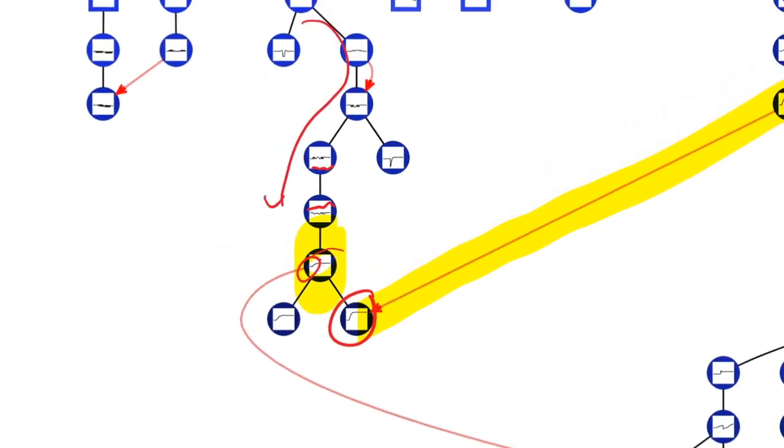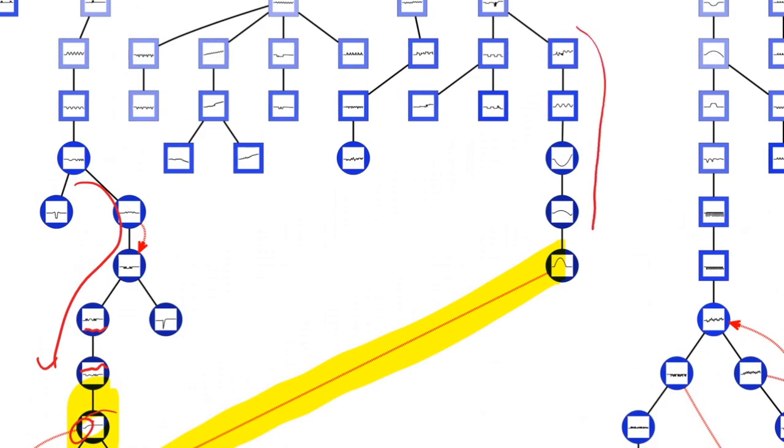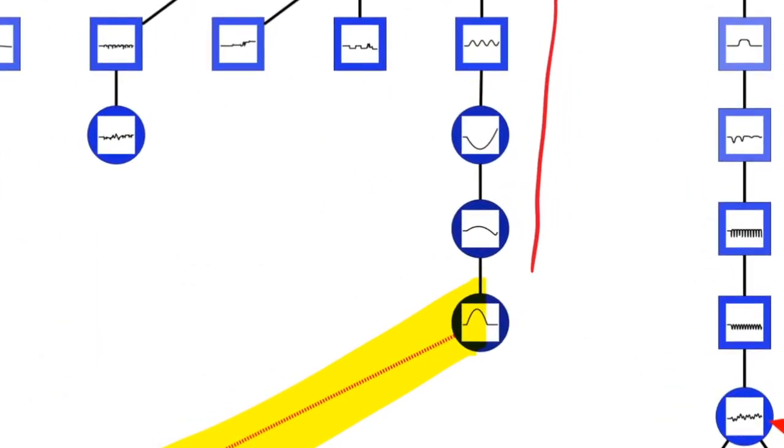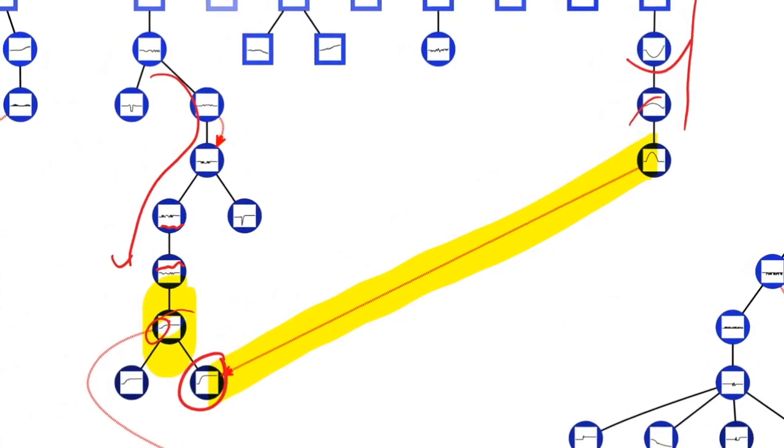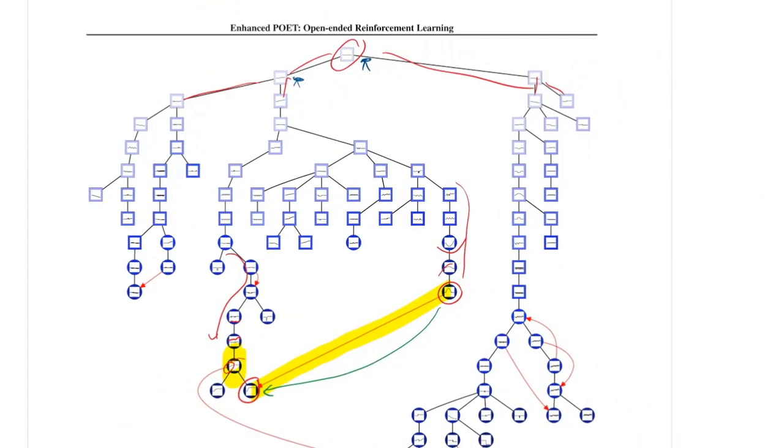Now the agents that come from here have been optimized to solve the squiggliness problem. But over here, this lineage has specialized more and more in these kind of large drops or steep hills. So the agent trained over here was found to be very effective in this environment and therefore can be transferred. This population branching out into different trees and then transferring solutions between parts of the trees is what makes Poet a very powerful mechanism.